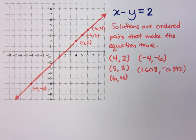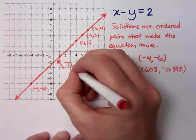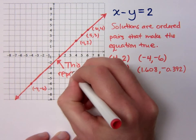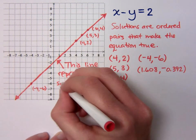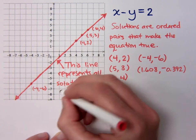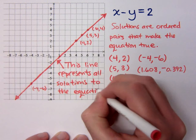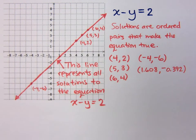Everything on that line should be true. That means everything on this line is a solution. So the line right here, this line represents all solutions to the equation that we were talking about. It represents all solutions to the equation x minus y equals 2.